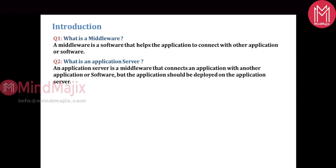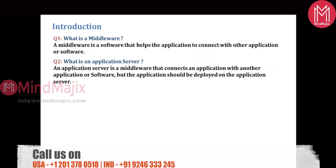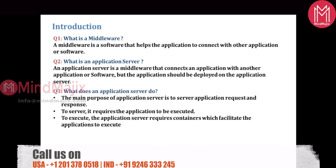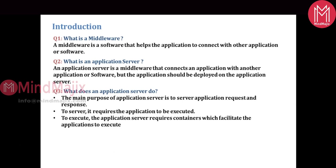For example, if I deploy a Java application, that Java application can be connected to a database or to a JMS, but the point is that the Java application has to be deployed on your application server. The main purpose of an application server is to serve the requests and responses of the application. You host the application on an application server so it can serve requests and responses — this is what we call hosting, which happens via internet or intranet.